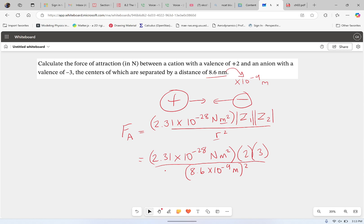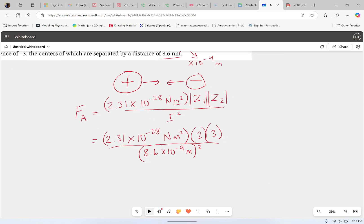When plugging it in, be careful with your calculator because with these powers like × 10^-28 or × 10^-9, mistakes happen sometimes. If you plug it in correctly, you should get 1.9 × 10^-11 newtons.